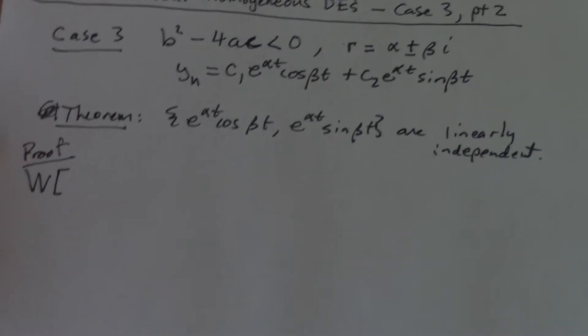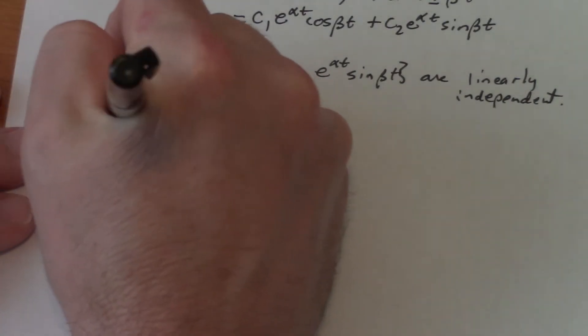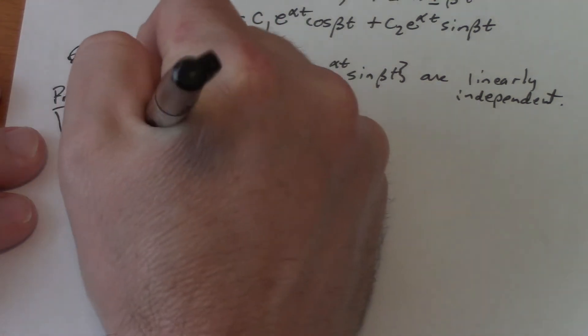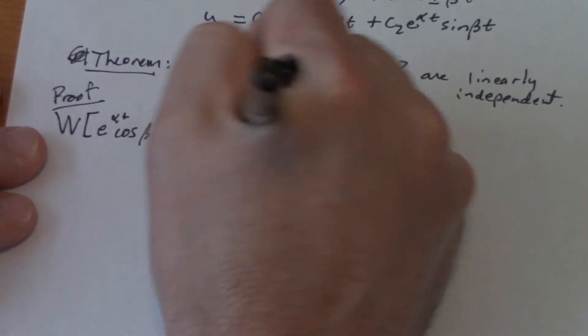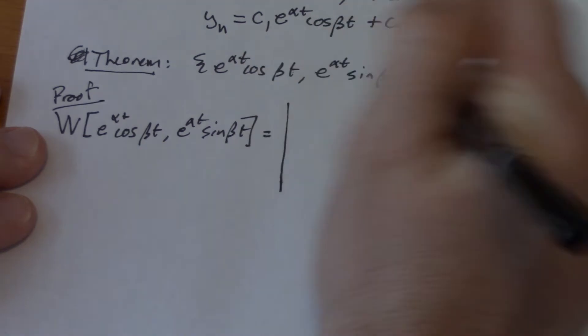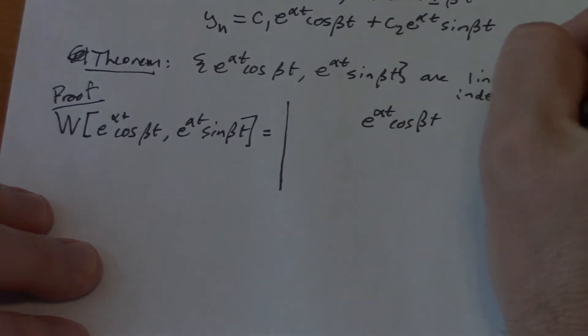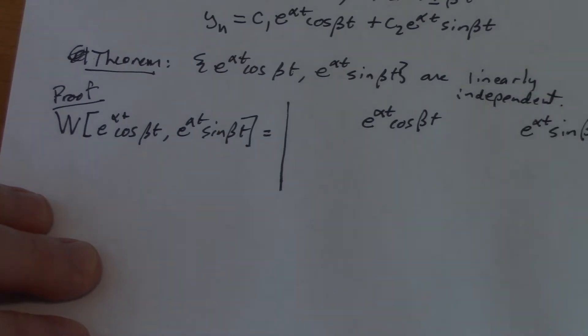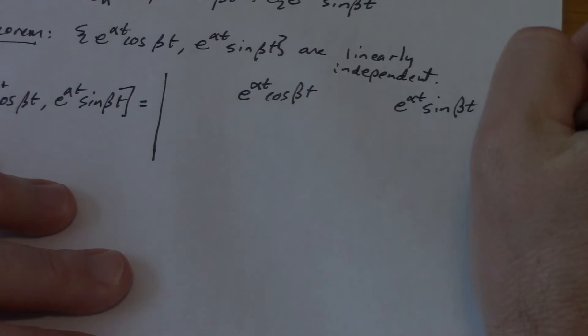So this is my proof. We're going to look at the Wronskian of e to the alpha t cosine beta t and e to the alpha t sine beta t. Let's see if I can fit all this in on this sheet of paper. I'm going to write this kind of in the middle, e to the alpha t cosine beta t, and then over here, e to the alpha t sine beta t. Underneath I need to take the derivatives.